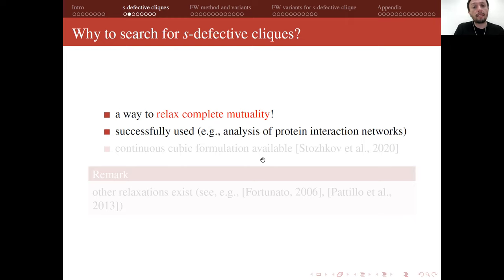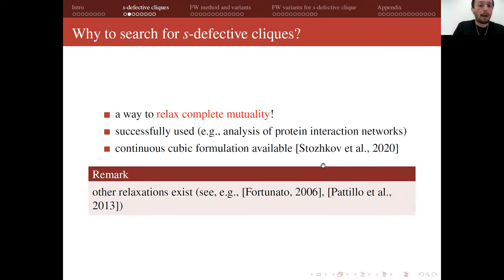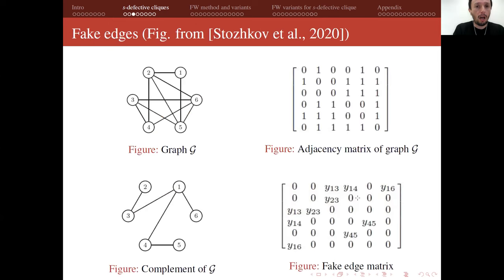What we need to note is that this continuous cubic formulation is just one way to relax complete mutuality — there are many alternatives in the literature, which can be found in review papers on community detection and cluster detection problems. The focus here is on the maximum s-defective clique problem, and we try to adapt results from the classic maximum clique problem.